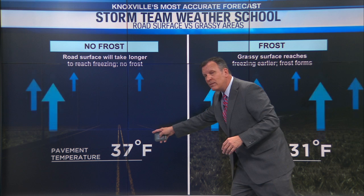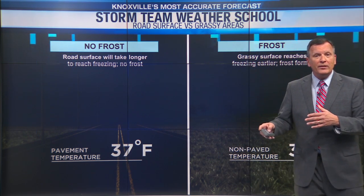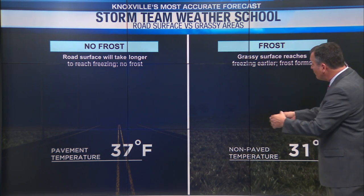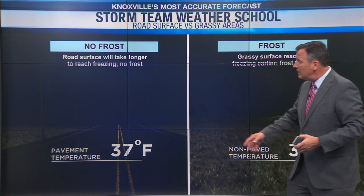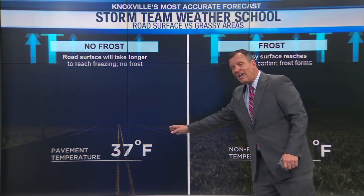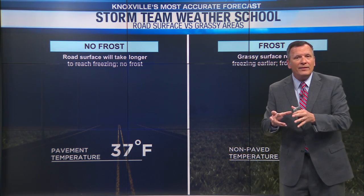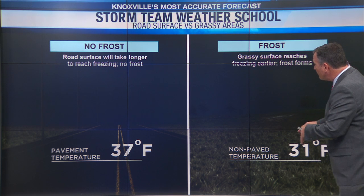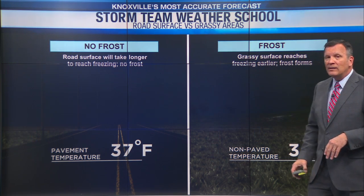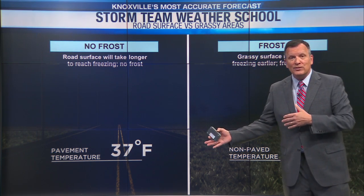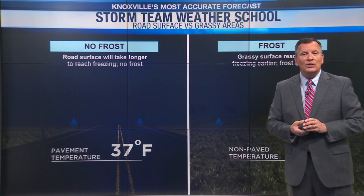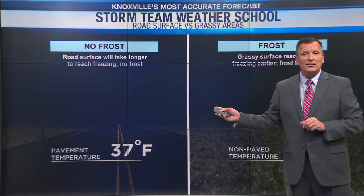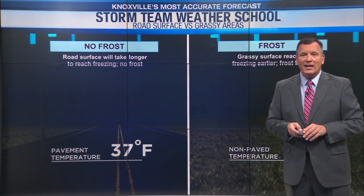Meanwhile, the pavement temperature remains above freezing. So you're driving down the road — the road's fine, but you see frost off on either side. That's because the pavement has maintained and held the heat of the day while the grassy surfaces have radiated it all away. That's the difference on a cold winter's morning on a clear start when you've got frost on the grass and not on the roads.